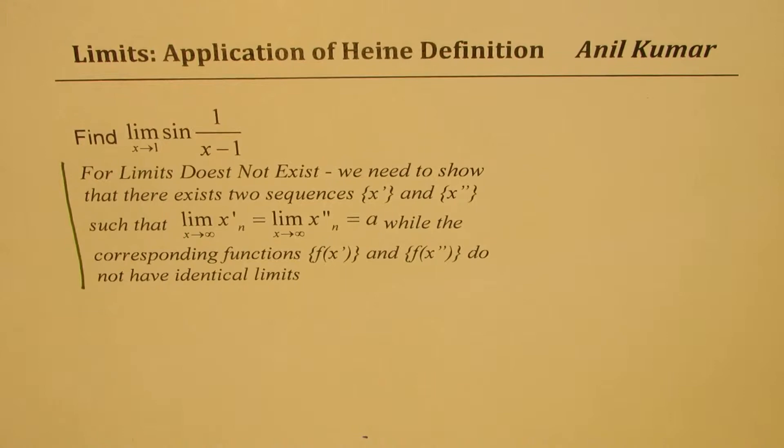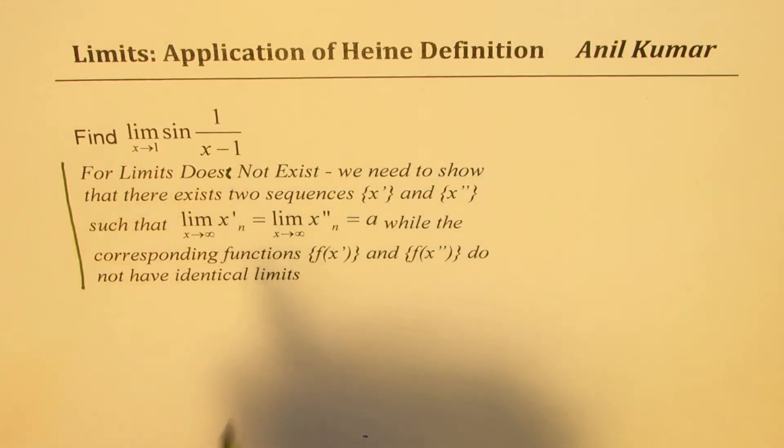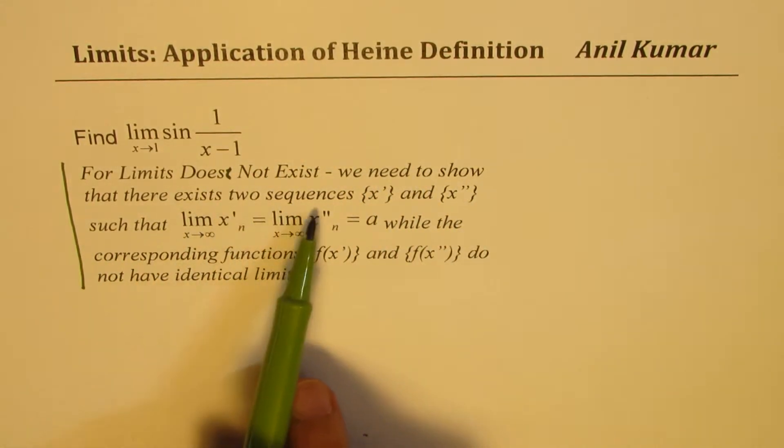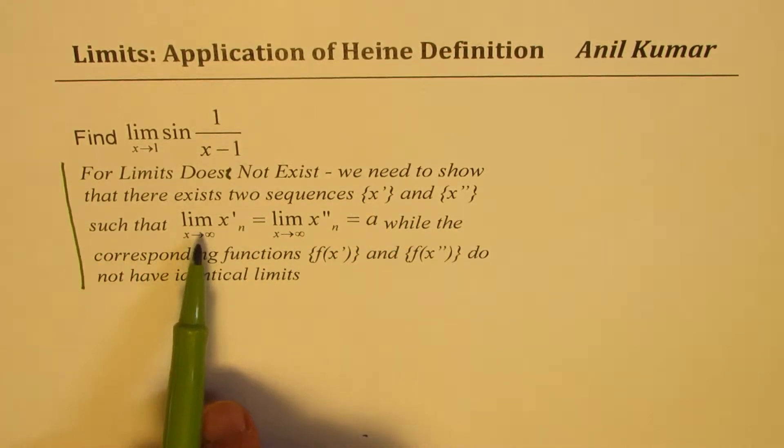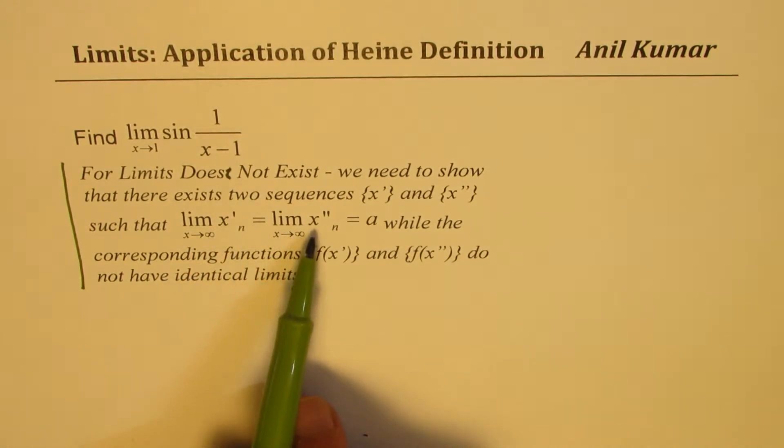For limits does not exist, we need to show that there exists two sequences x prime and x double prime such that limit x prime as n approaches infinity equals limit x double prime as n approaches infinity, and both are same. While the corresponding functions f(x prime) and f(x double prime) do not have identical limits. So that is the postulate which we have.